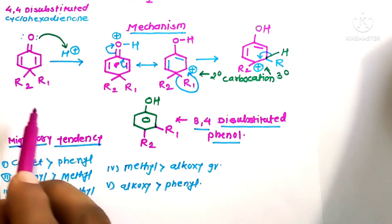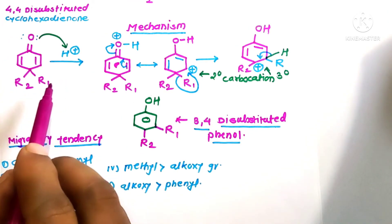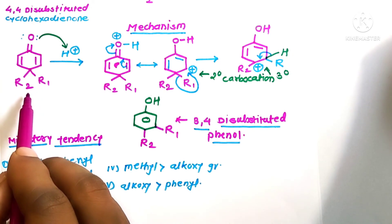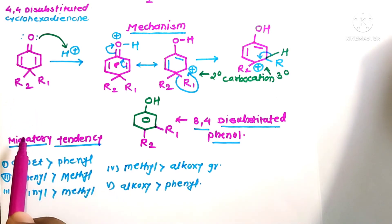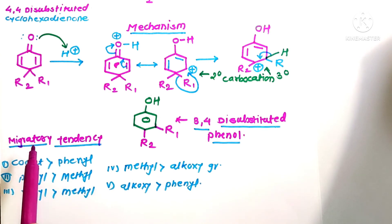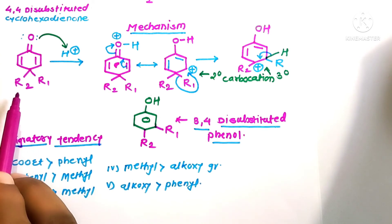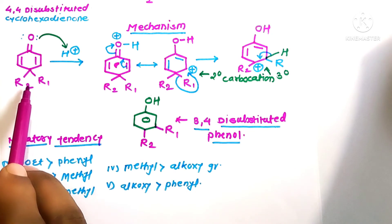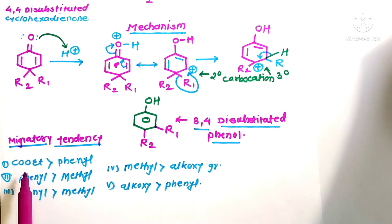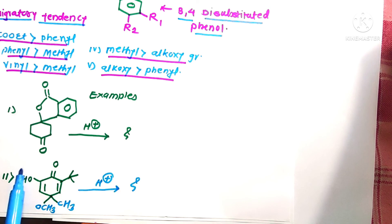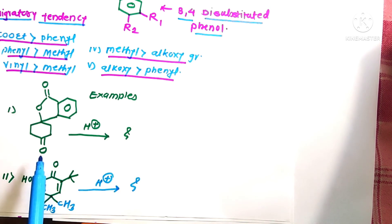In this rearrangement reaction, a 1,2-shift takes place from a less stable to a more stable carbocation. Therefore, migratory tendency is important. When the molecule contains two different groups R1 and R2 at the same carbon, migratory tendency determines which group migrates. Here are two practice examples — try to find the correct product for each substrate molecule.